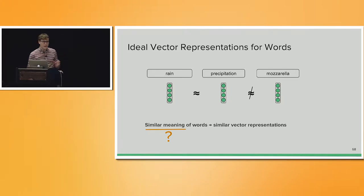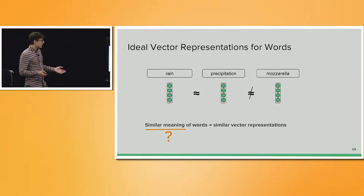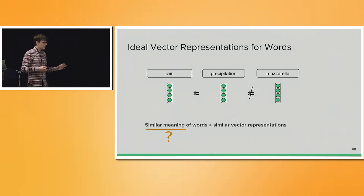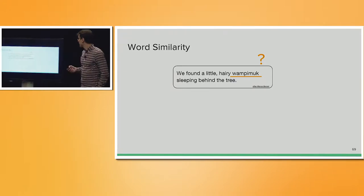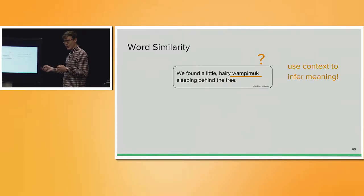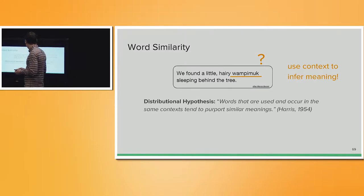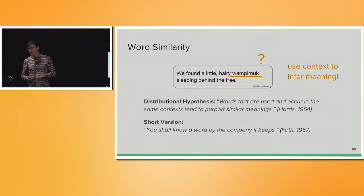Ideally, we would like the representations for rain and precipitation to look very similar, while another word like mozzarella would be completely different. So similar meaning of words should be reflected in similar vector representations. In order to get there, we have to think about what word similarity is. There's an example from Marco Barroni: 'We found a little hairy wampymook sleeping behind the tree.' Wampymook is a completely made-up word, but you can use the context around it to think about what it could be. This brings us to the distributional hypothesis — words that occur in the same context tend to purport similar meanings, or: 'You shall know a word by the company it keeps.'